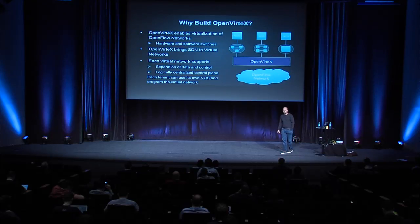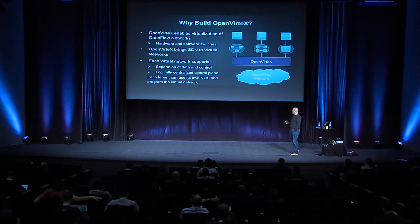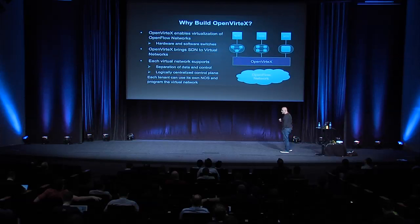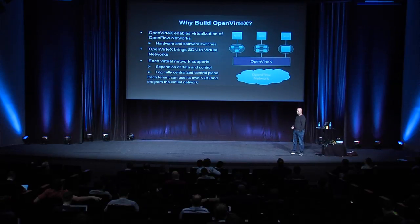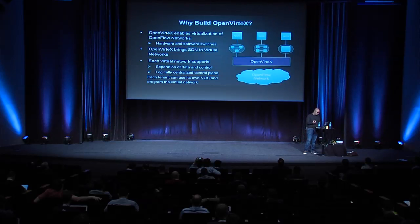So why did we bother to build OpenVertex when there are all these other network virtualization platforms that exist today? The reason is simple. There are no network virtualization platforms out there currently that allow you to program the virtual network they produce. They use some flavor of SDN to give you virtual networks, but then they take SDN away from you. We should be able to program our virtual networks — that's exactly what OVX does.